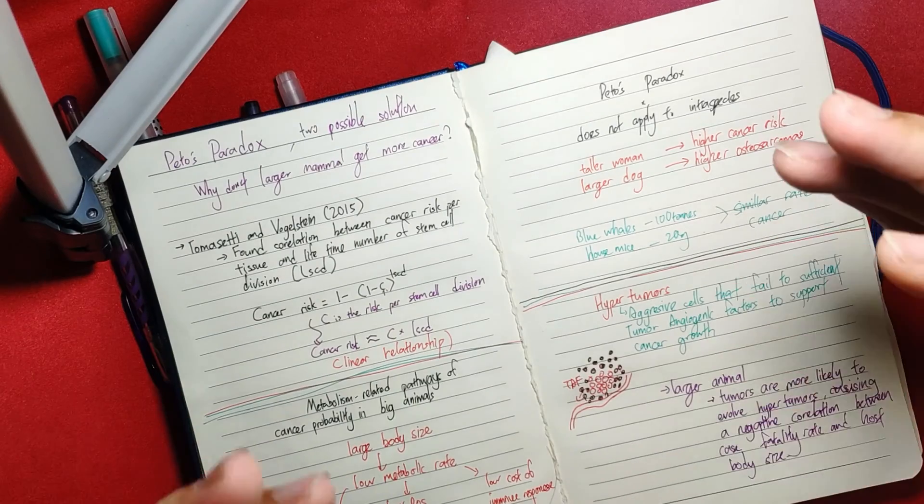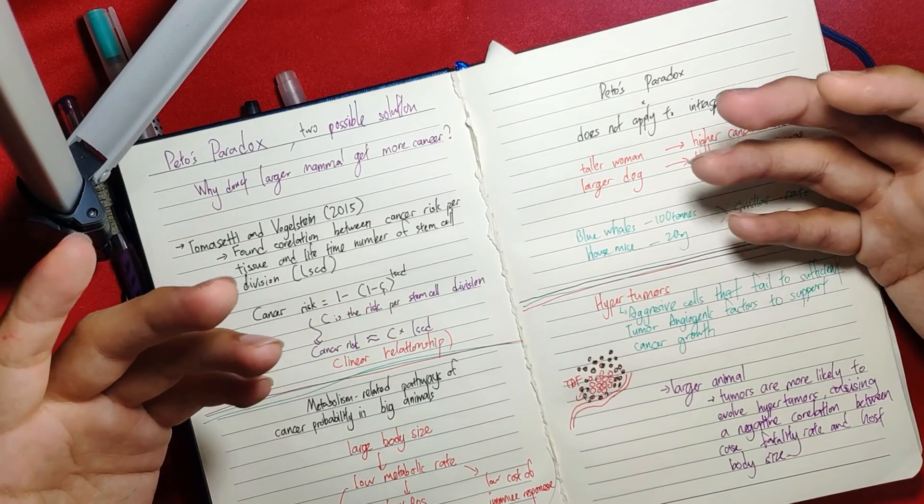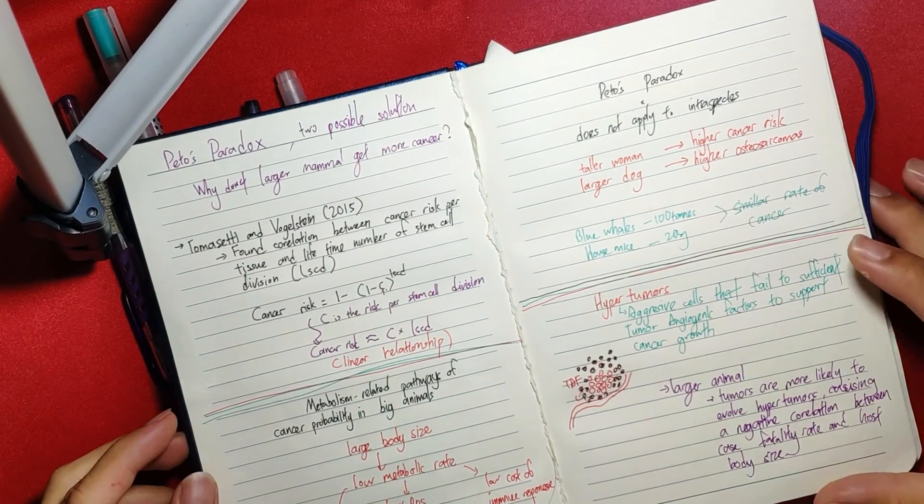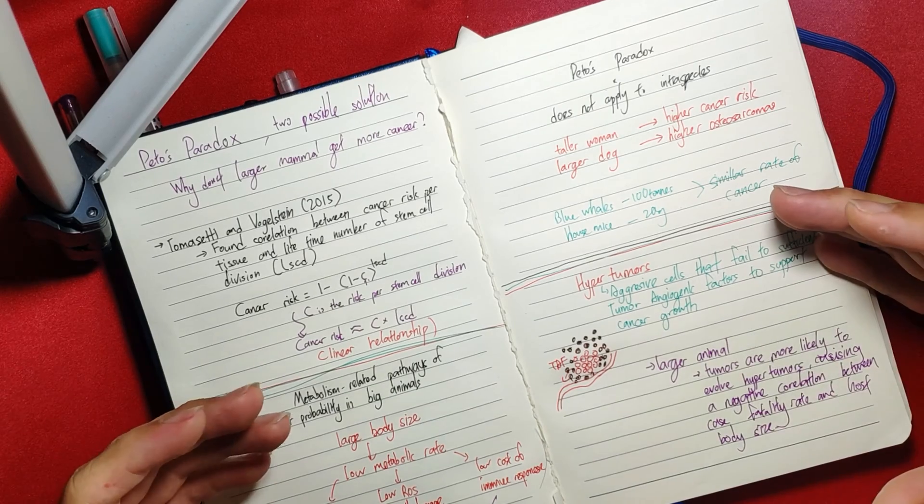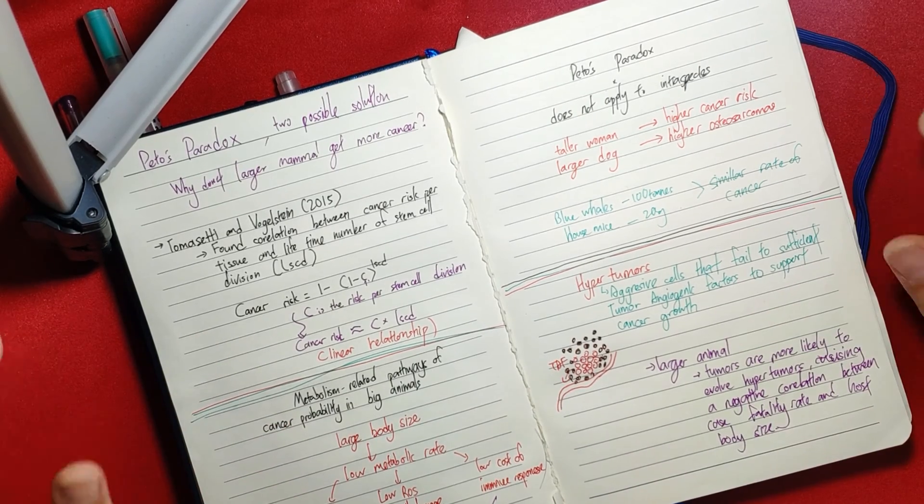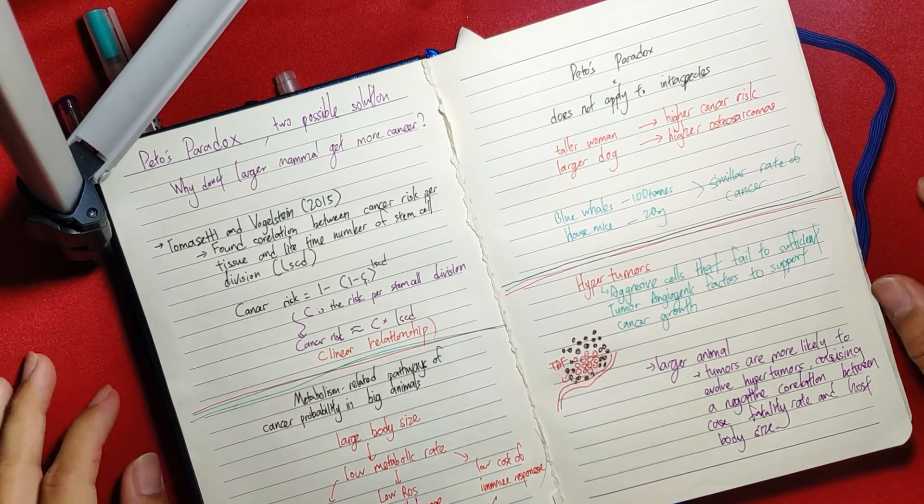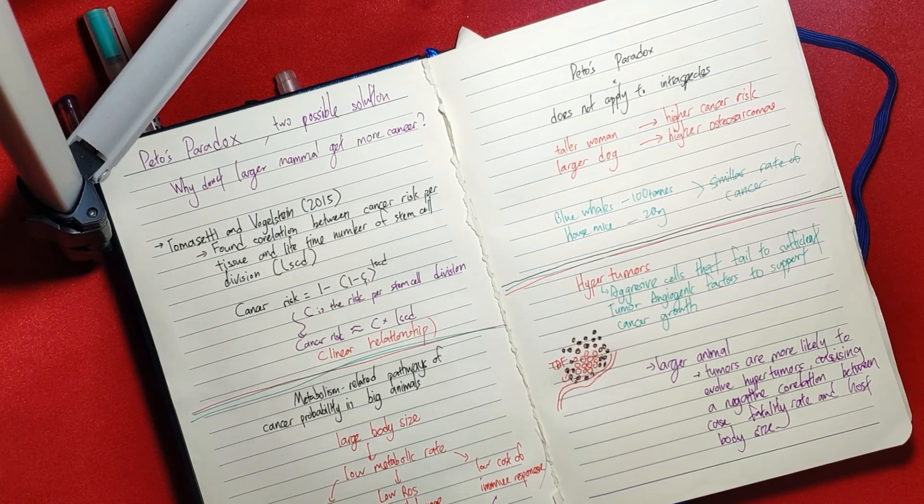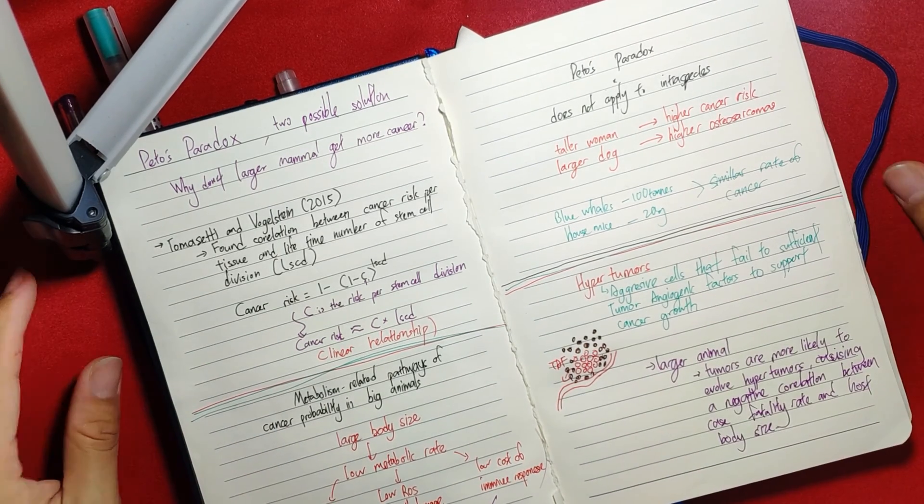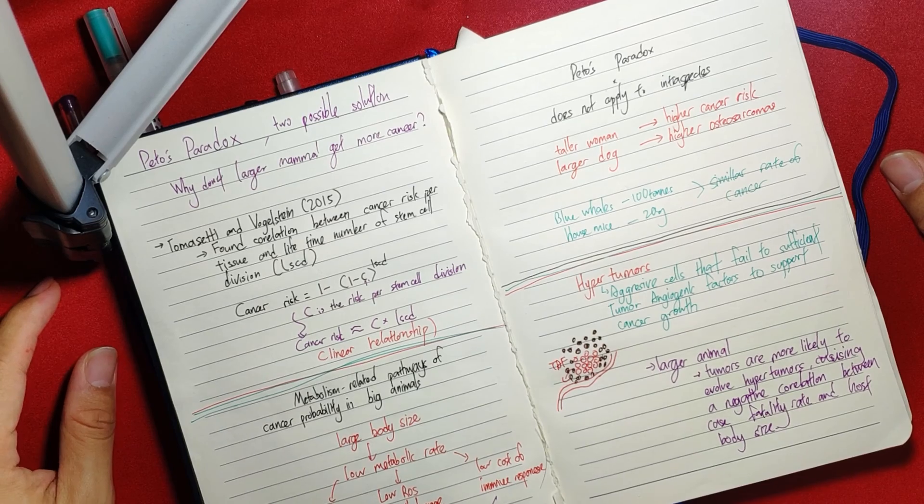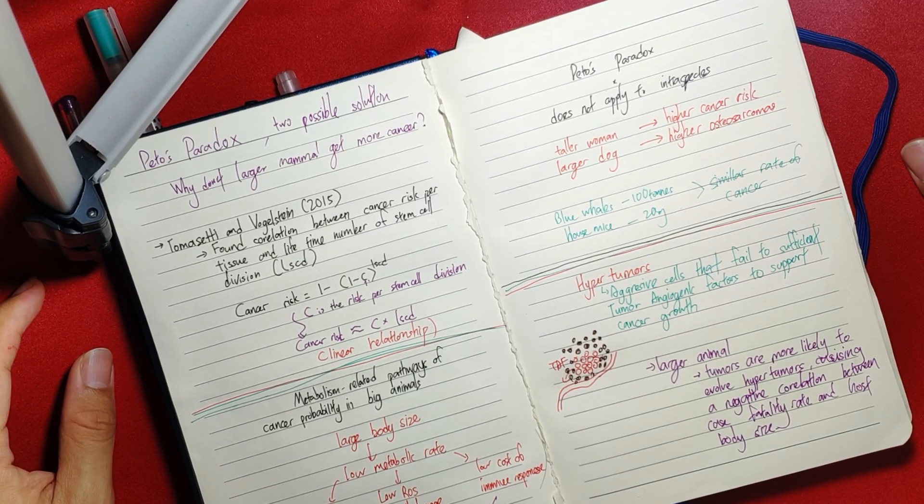These are the two mechanisms that explain why larger animals do not get cancer. It might be able to help us further research on how we can prevent more cancer in human beings and eventually stop everyone from dying. So that is Peto's Paradox and the two possible solutions. Thank you for watching, breakfast for a living.